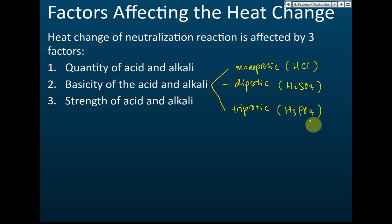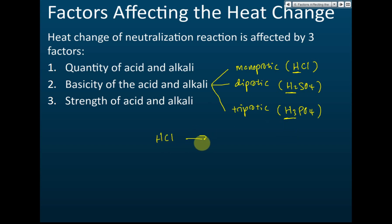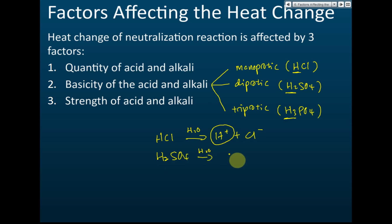How do we know if an acid is monoprotic, diprotic, or triprotic? We look at the number of hydrogen ions produced when the acid dissolves in water. If one hydrogen ion is produced, it is monoprotic; two hydrogen ions means diprotic; three means triprotic. For example, HCl when dissolved in water forms one hydrogen ion and one chloride ion — so it is monoprotic.